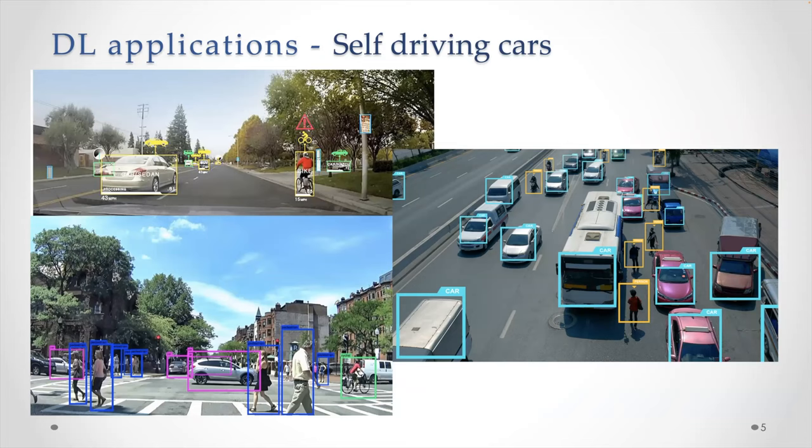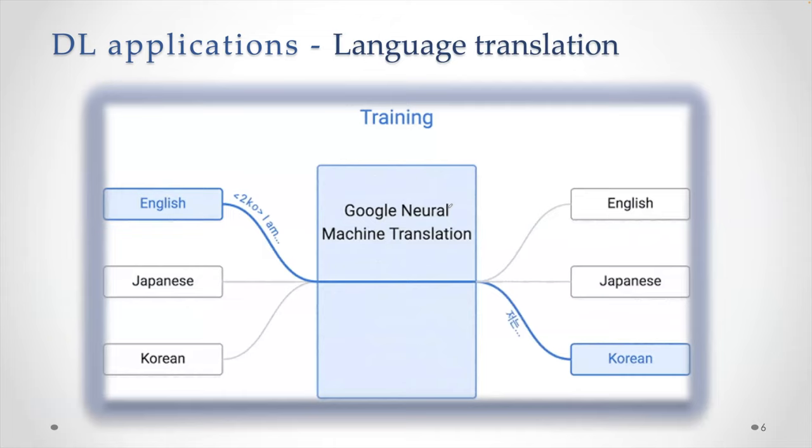Another example you may come across is language translation. Google is one of the leaders and you can easily translate one language into another. So typically I use this as a user when I get some comments on my YouTube channel, which are not in the language that I understand. So I simply copy that and paste in Google and then immediately I get the translation.